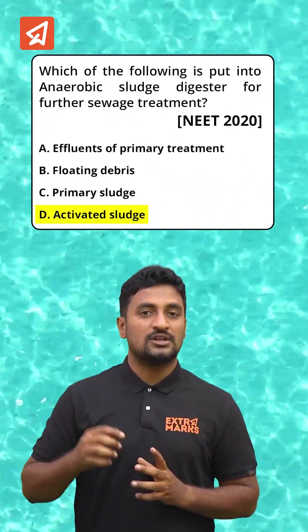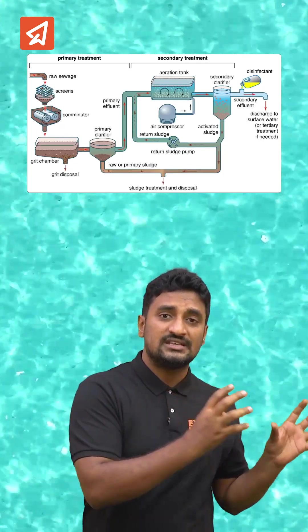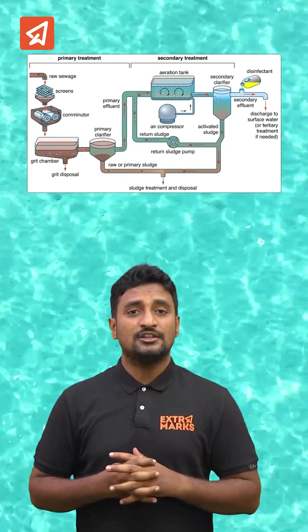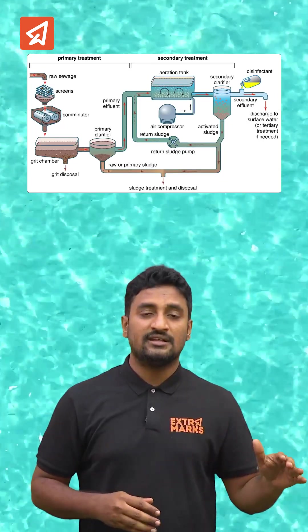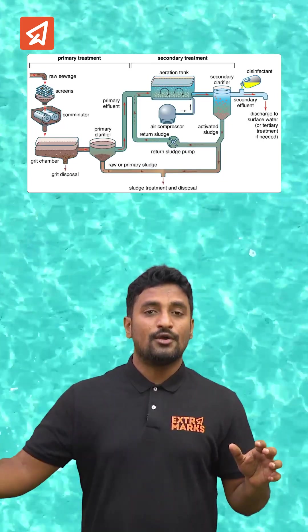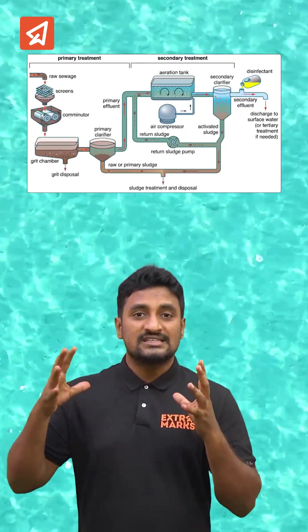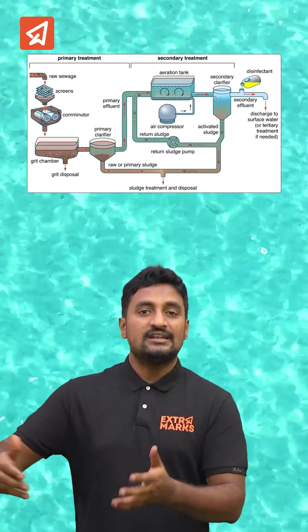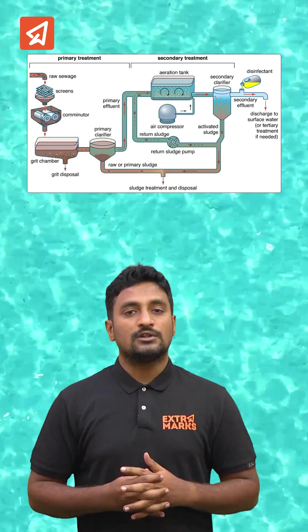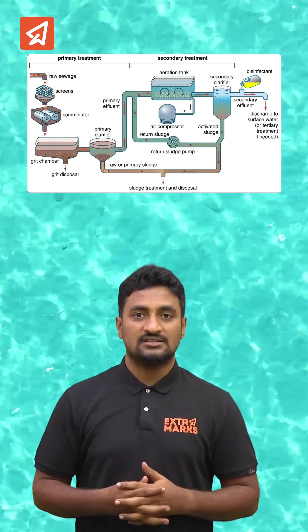The answer to our question is option D. This activated sludge is sent to the anaerobic digester where it is completely broken down and biogas is produced as a by-product. Later, this secondary treated water is released to local water bodies like rivers as well as the ocean.